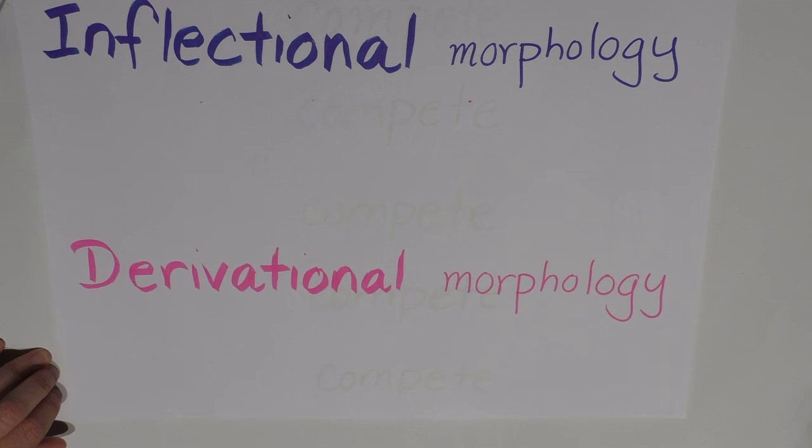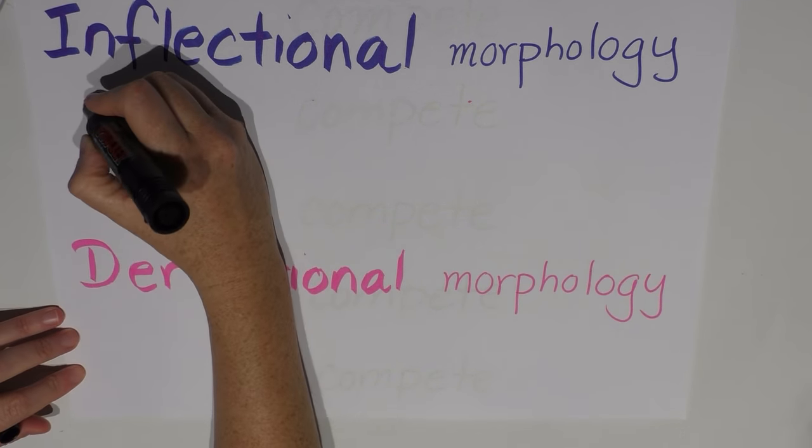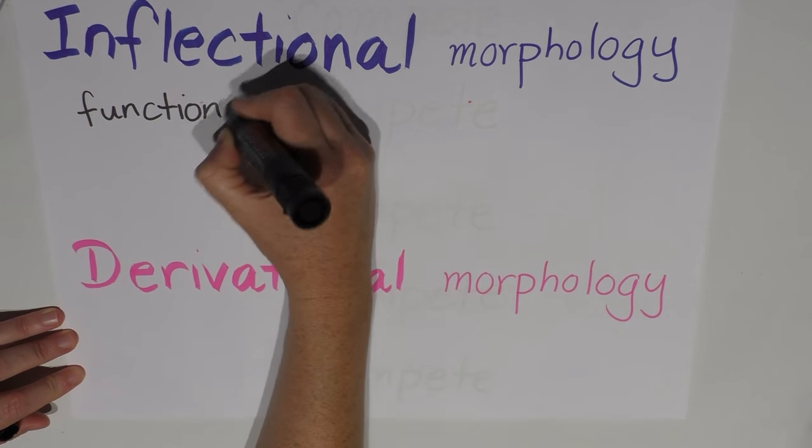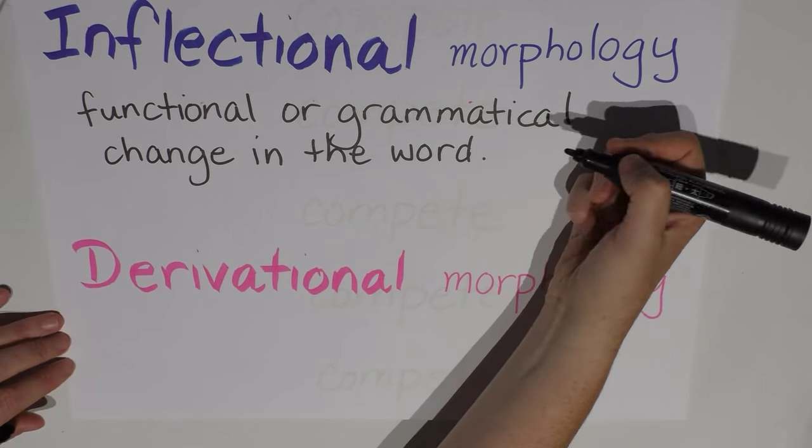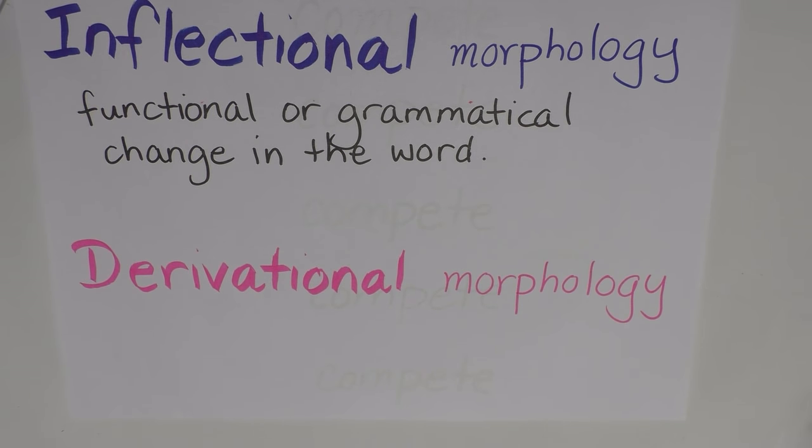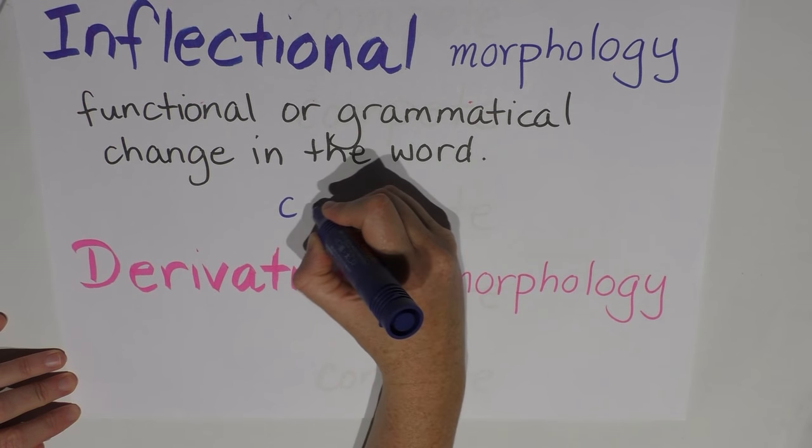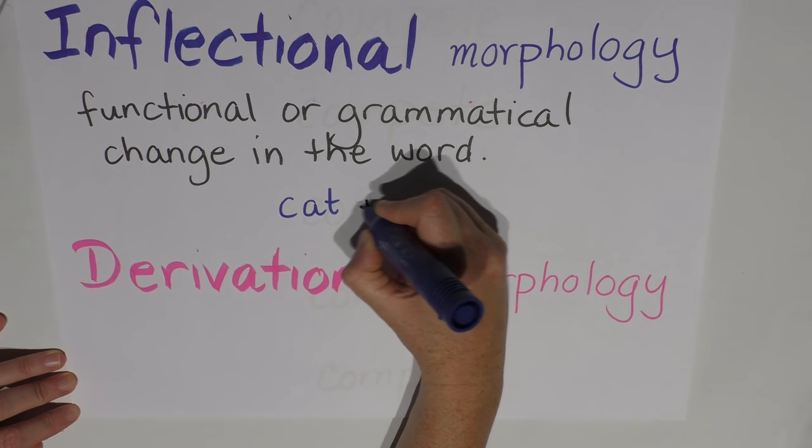Inflectional morphology refers to a functional or grammatical change in the word. For example, cat is a noun. If we have more than one cat, then we add an S and we say cats.